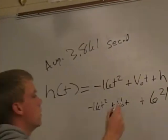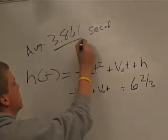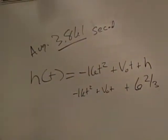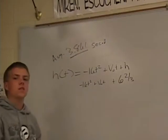So to find the velocity of that equation, since we know 3.861 is the amount of time it takes the ball to go up, come back down, and land.